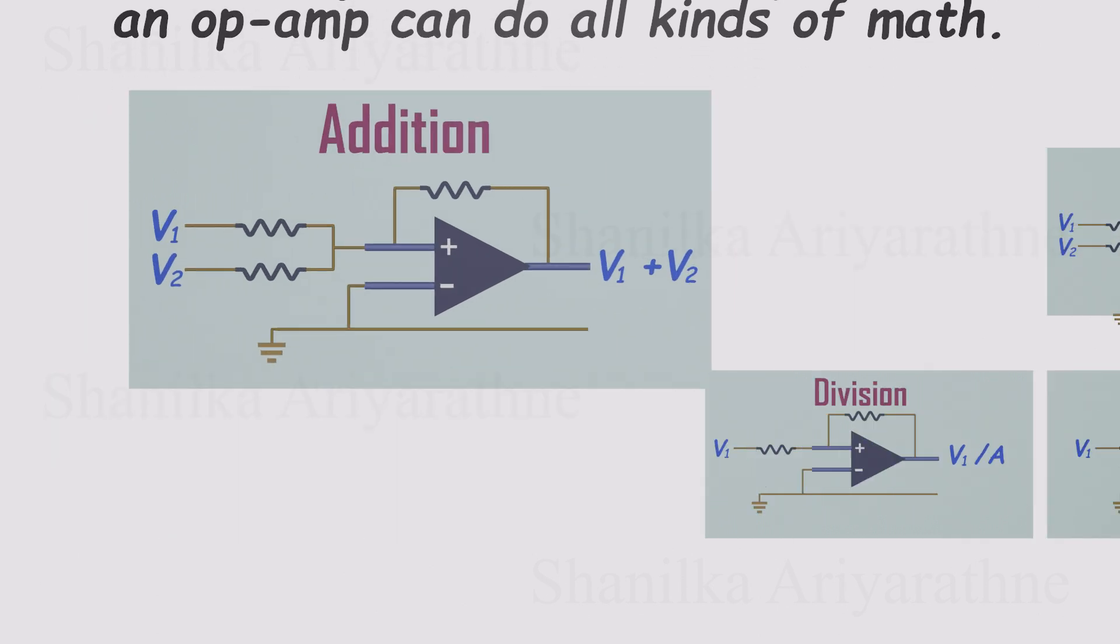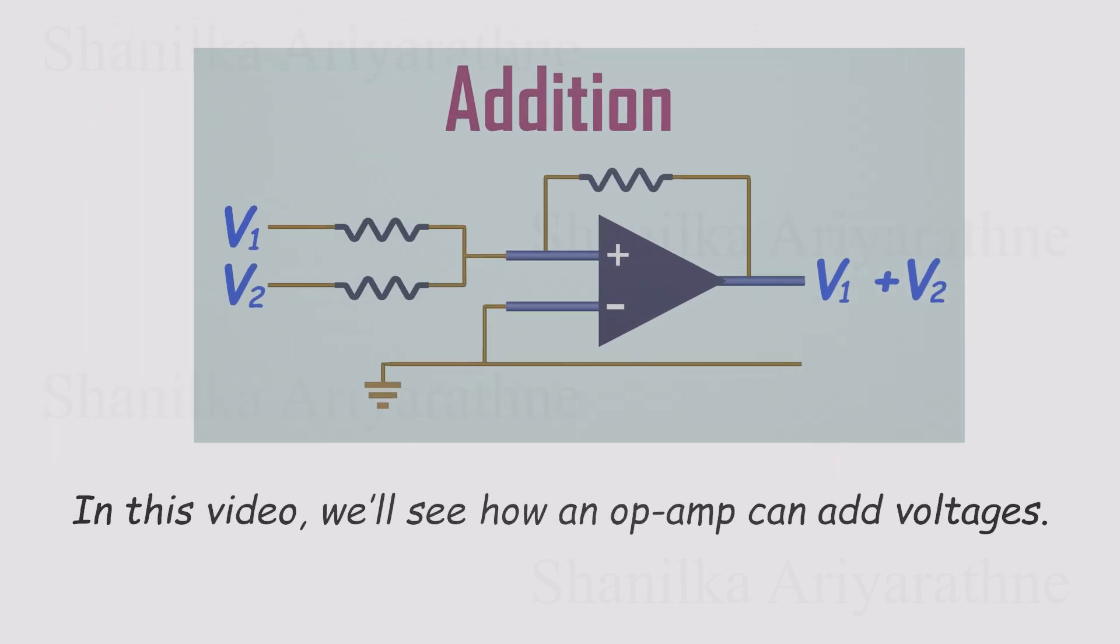In this video, we'll zero in on one of the simplest and most practical tricks. Using an op amp to add voltages together. And if you're curious about what else they can do, check out our playlist. We've got plenty more examples of how these little chips keep showing off.